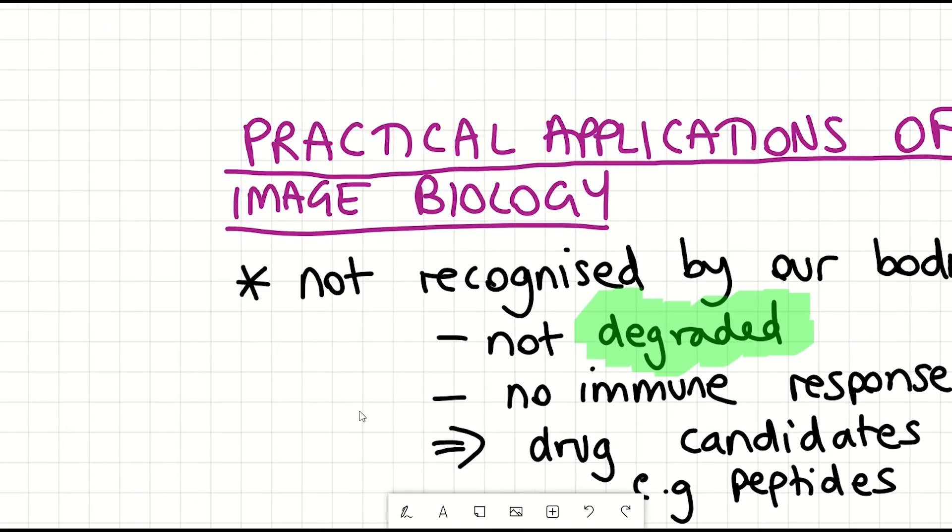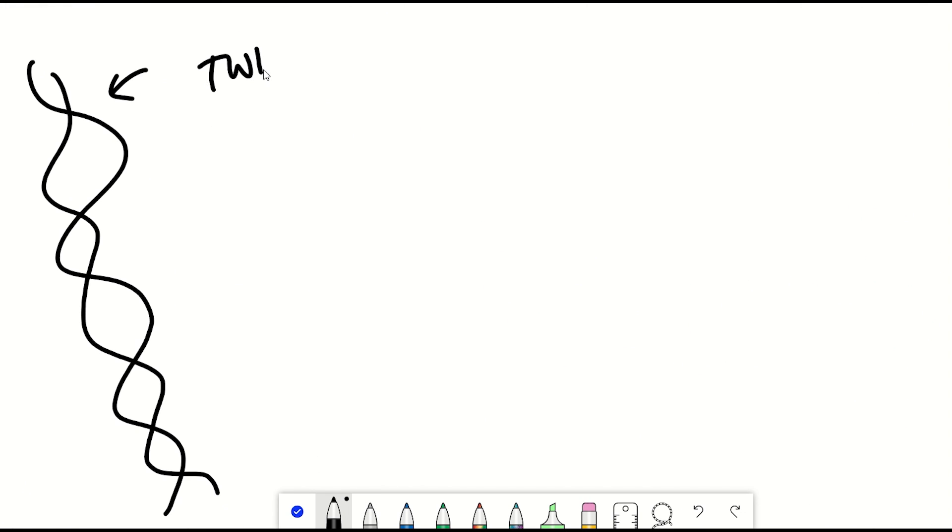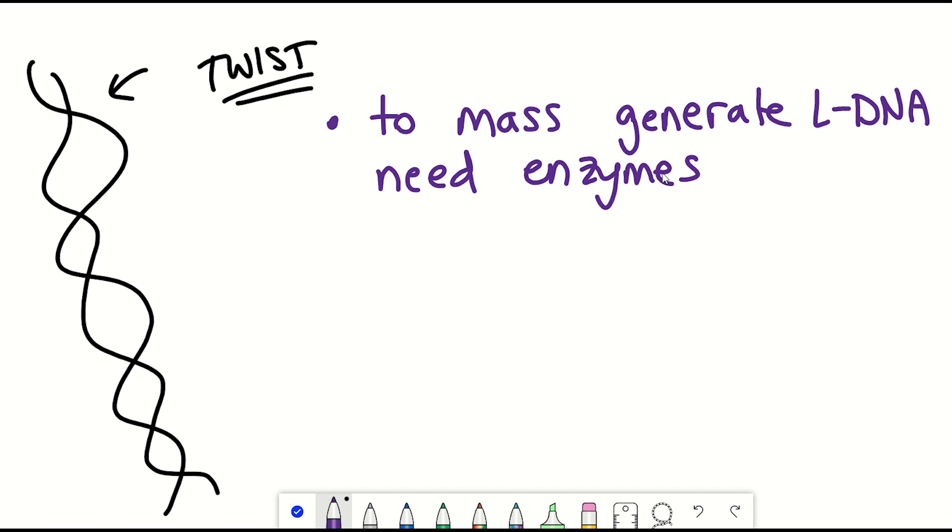But like the structure of DNA, there's a twist. And the twist is that if you want to mass generate this mirrored version of DNA, you need enzymes to synthesize the DNA. The most efficient way to do this is to have enzymes that can synthesize the DNA, and then have other enzymes that you can use to sequence the DNA and check that you got it right.